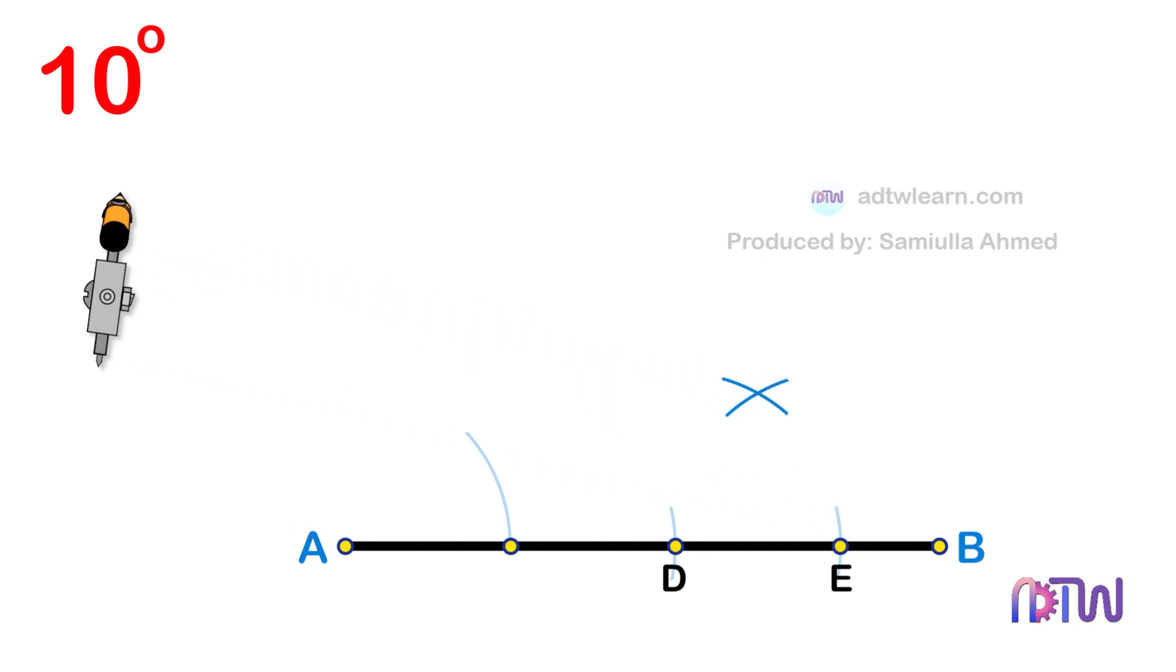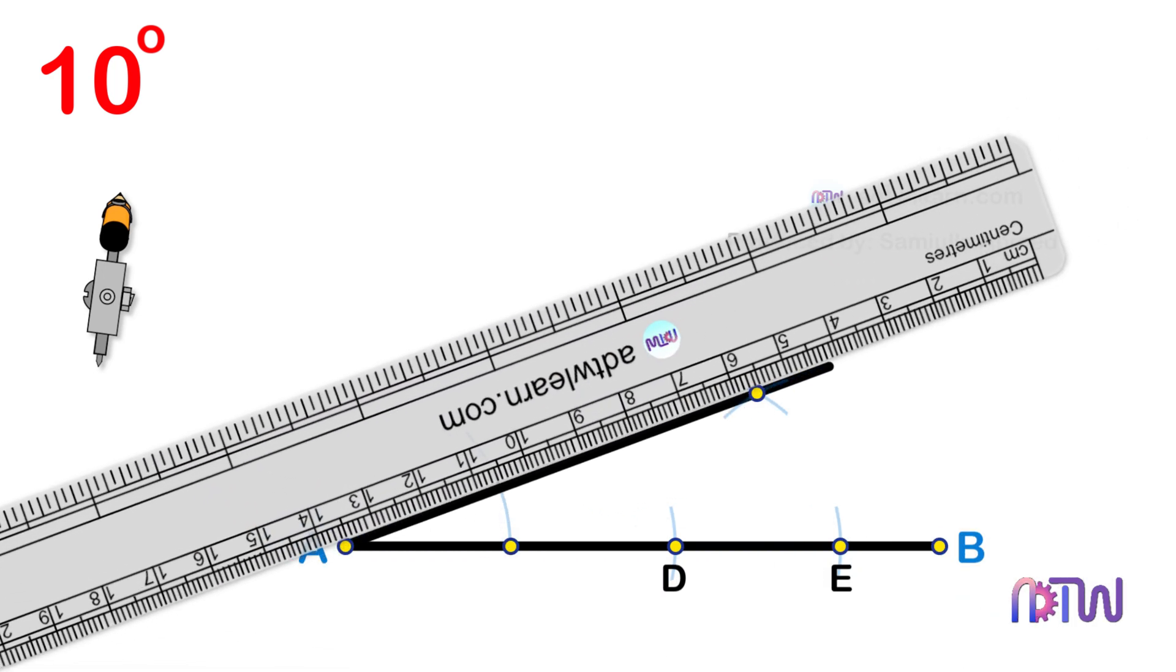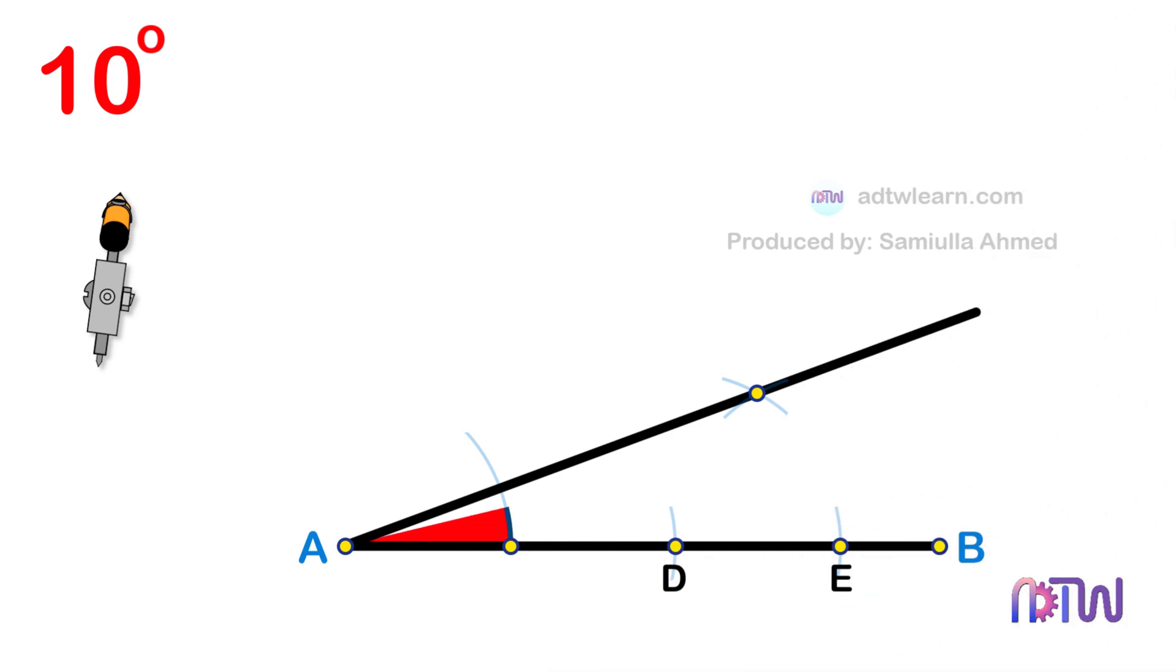In the end, draw a line passing through this point from endpoint A of the line segment. The angle made by this line with the horizontal line is 20 degrees.